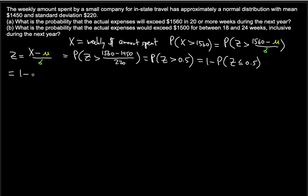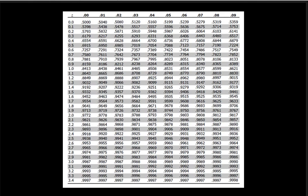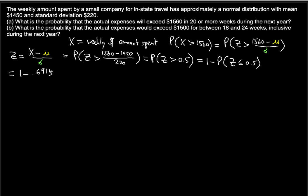So we get 1 − 0.6915 = 0.3085. This is the probability of a weekly amount exceeding $1560.